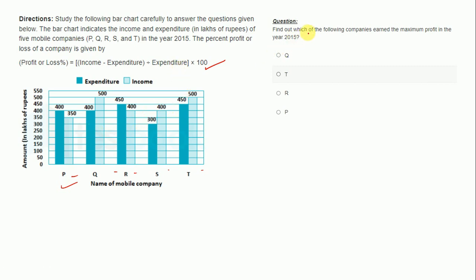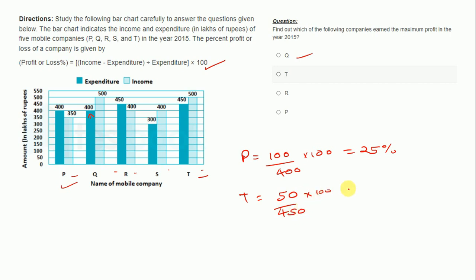Our first question is: find out which of the following companies earned maximum profit in year 2015. For Q, income is 500 and expenditure is 400, so profit = (500 minus 400) divided by 400 into 100 = 100/400 × 100 = 25%. For T, it is 50 divided by 450 into 100, which is approximately 11%. For R there is no profit, and for P there is a loss. So the correct answer is Q.